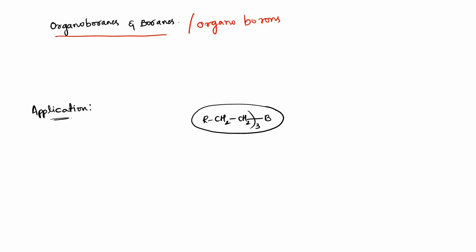What are organoborons? Organoborines or organoborons are those species which are obtained when you treat an alkyl or an aryl group with a borine molecule. Borines are basically either BH3 or B2H6. When you treat these species with an alkyl group, aryl group, or any organic compound, they lead to the formation of organoborines.